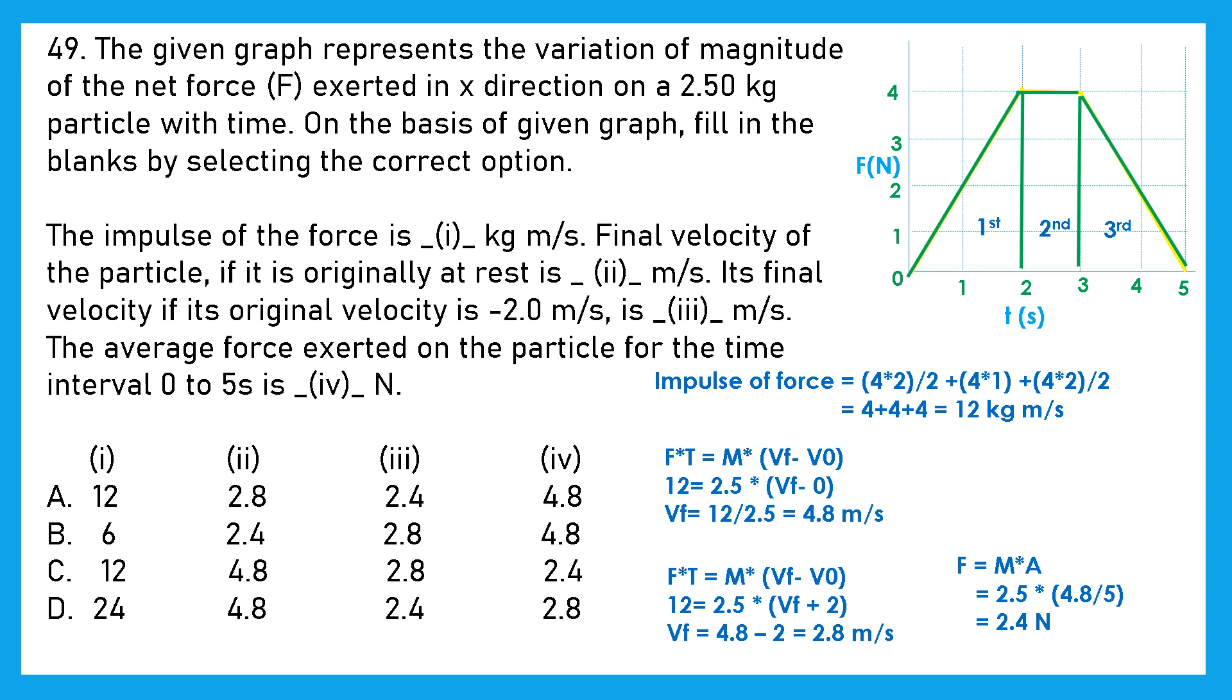Now moving to the last one, is the average force exerted on the particle for the time interval 0 to 5. And the formula for that would be F is equal to M into A, where M is mass and A is acceleration. And we will get 2.4 Newton with that. So our answer would be option C. For first it is 12, for second it is 4.8, for third it is 2.8 and for fourth it is 2.4.